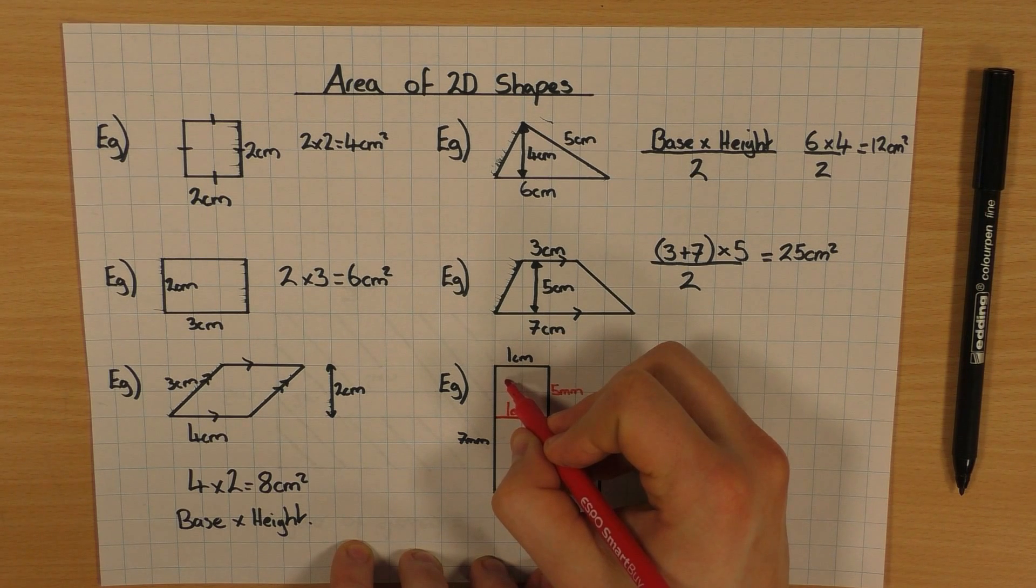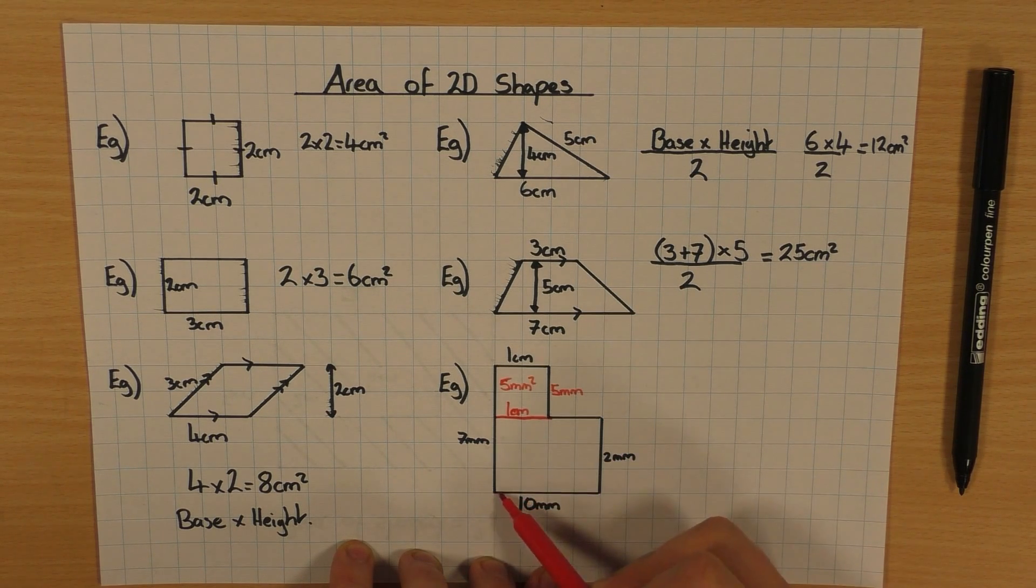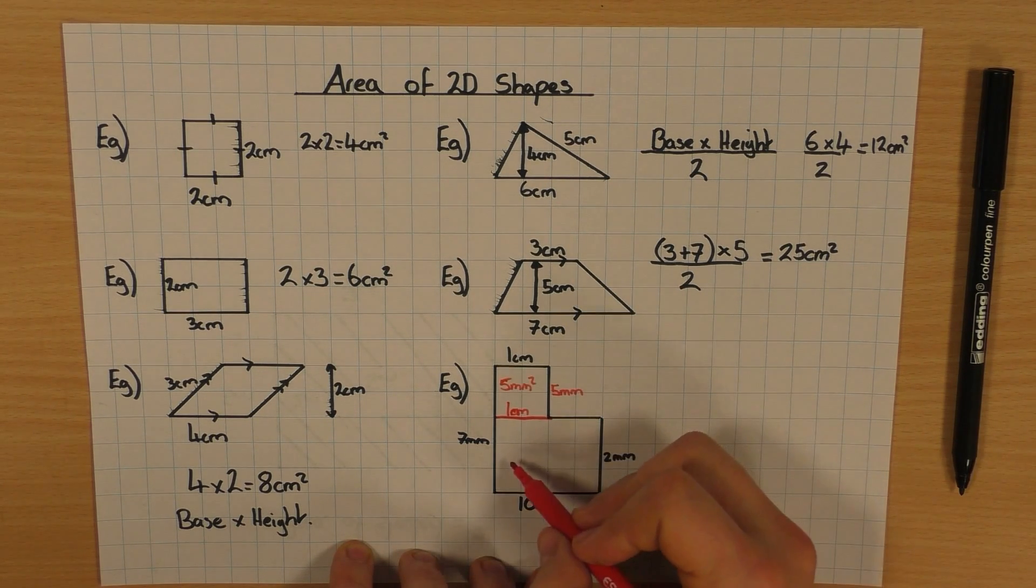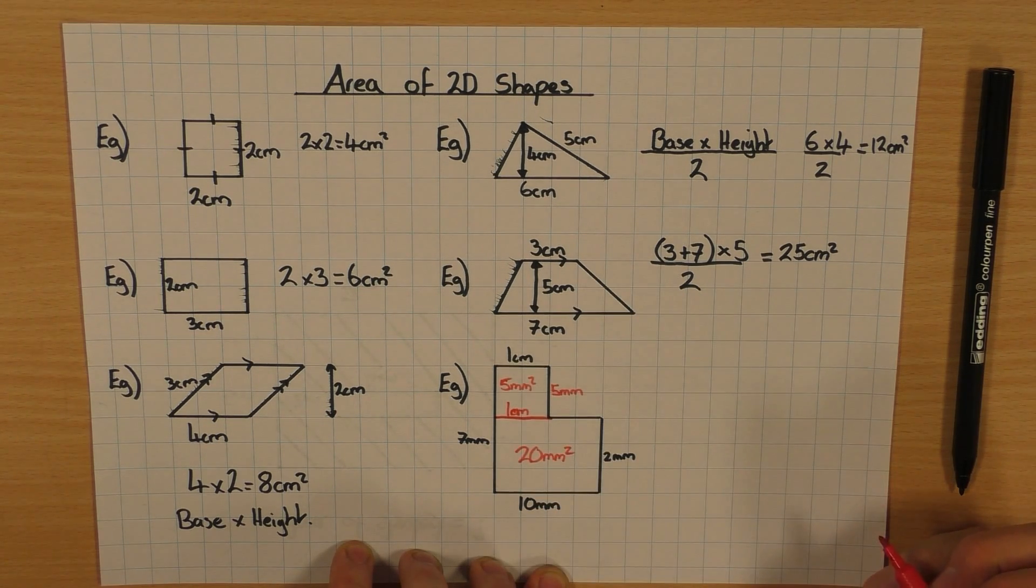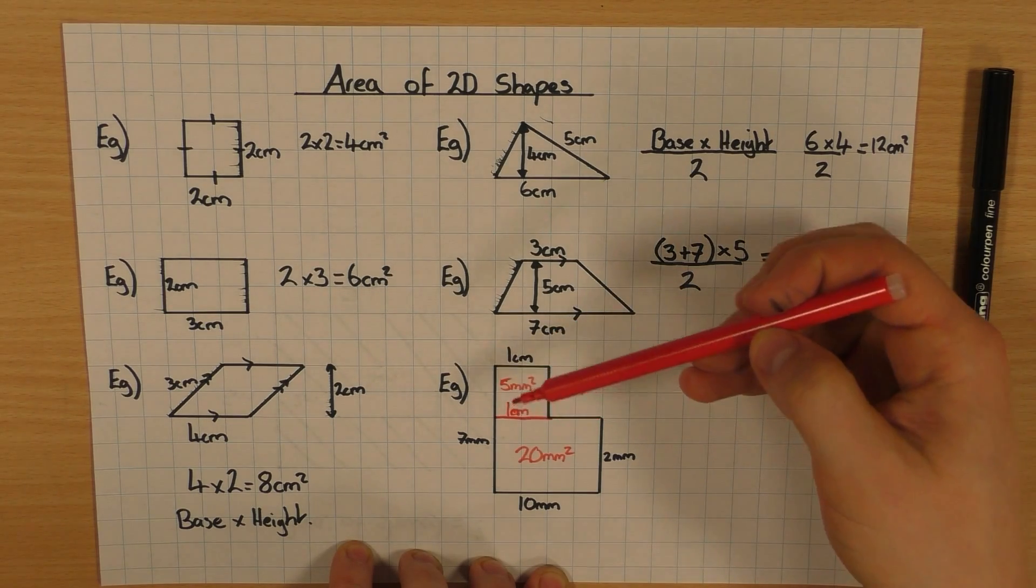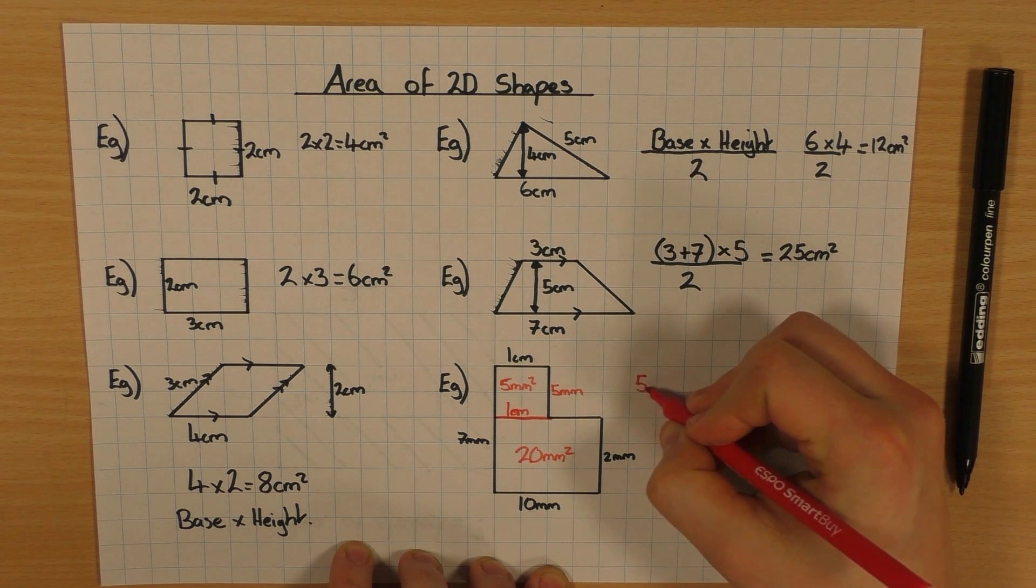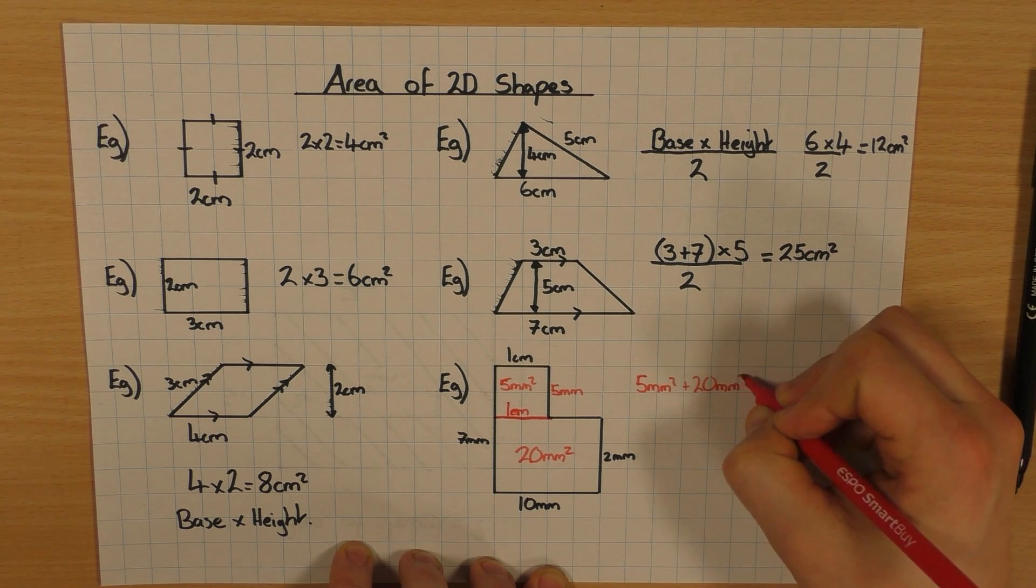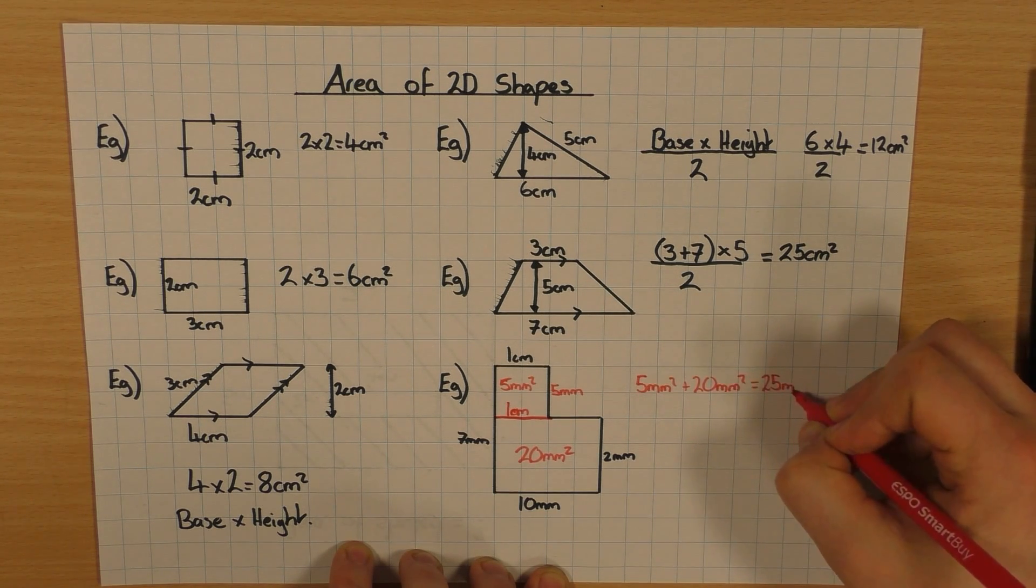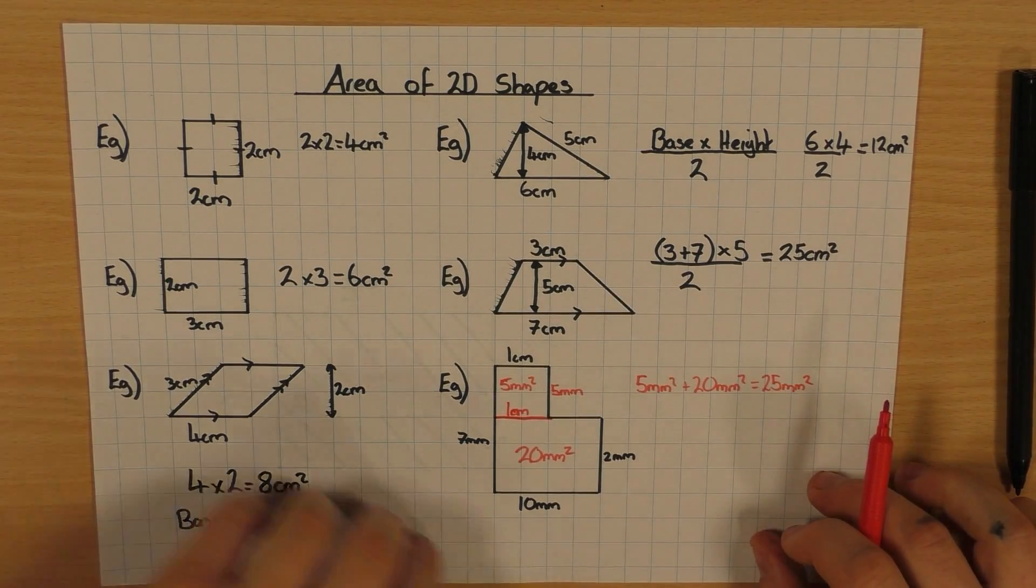1 times 5 is 5 millimeters squared. And I can work out the area of this. Base is 10. Height is 2. 10 times 2 is 20 millimeters squared. Once you've worked out the area of both of them, all you do is just add it up to get the total. So 5 millimeters squared plus 20 millimeters squared is 25 millimeters squared. And you've done it. So split up the shape into shapes you do know the formula is for. Work out each one and add it up at the end.